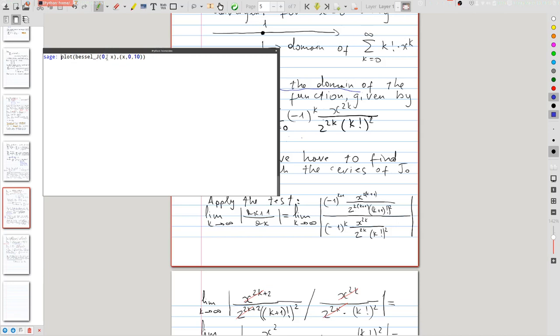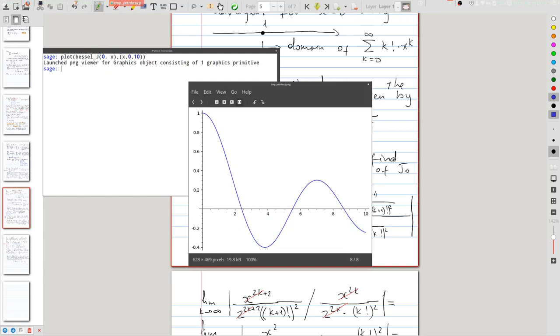Here is the command for Sage, which tells it to plot the 0th Bessel function. There are Bessel functions for all non-negative integers, and it's supposed to plot it between 0 and 10. This is the output of this command.